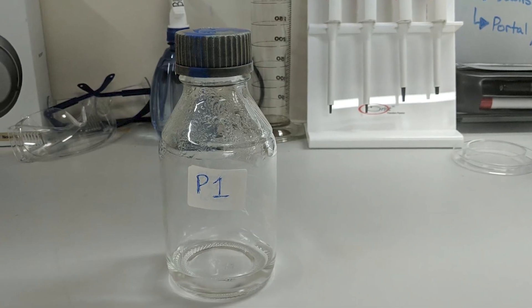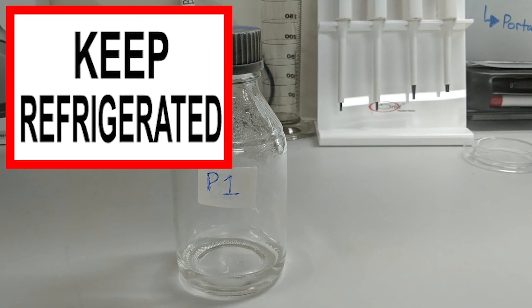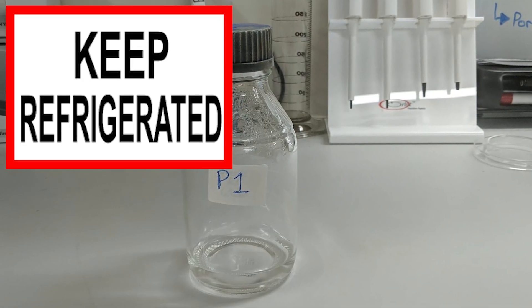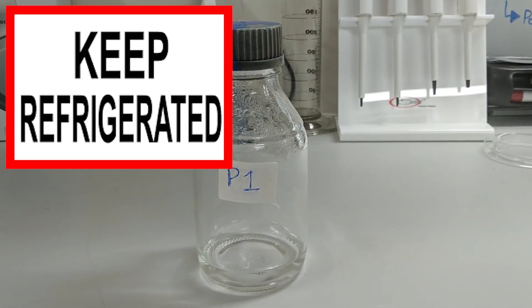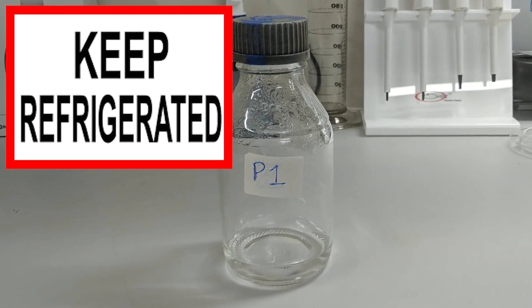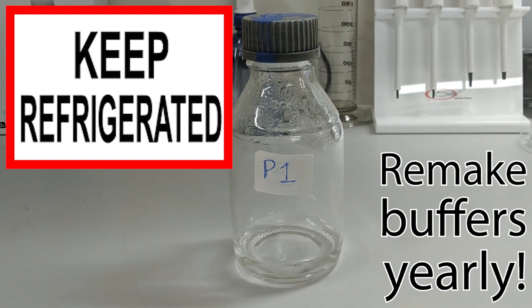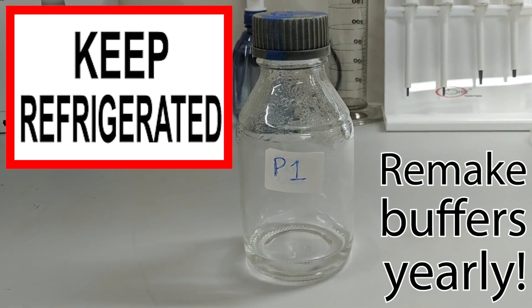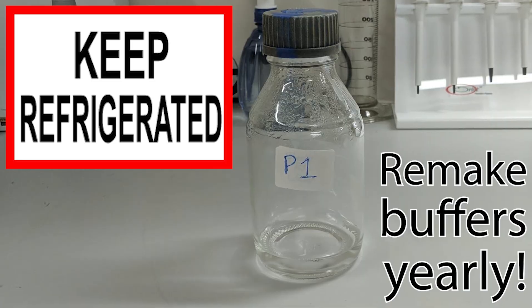And now you have your buffer P1 ready to use. Keep both the stock solution and the 15 mil falcon tube in the fridge. Solutions with RNase should be stable for about three months, and the stock solution for at least six months. Nine months is a stretch, and by the 12 month mark, you'll be back here watching this video again to remix your buffers. We'll see you then.